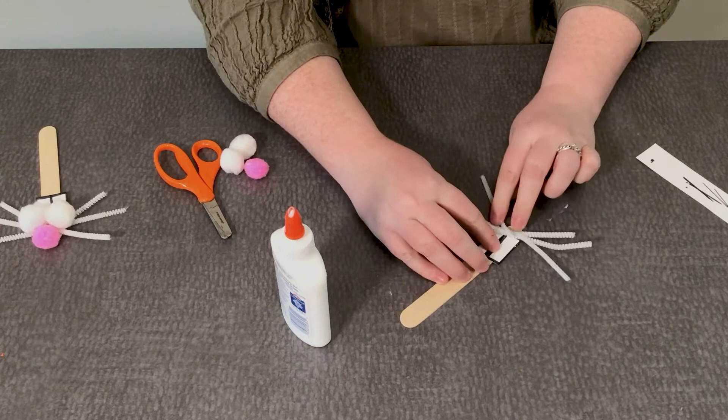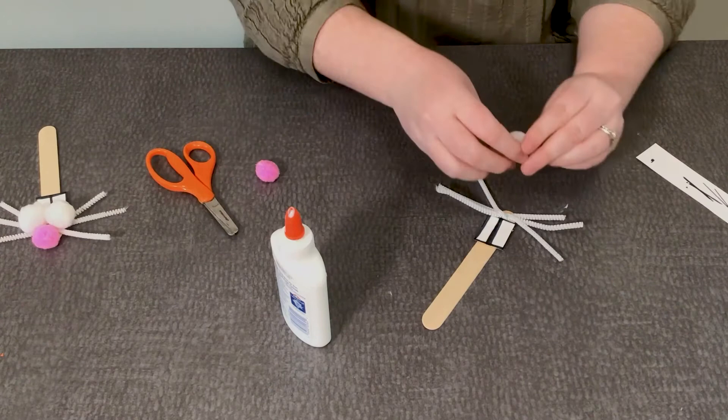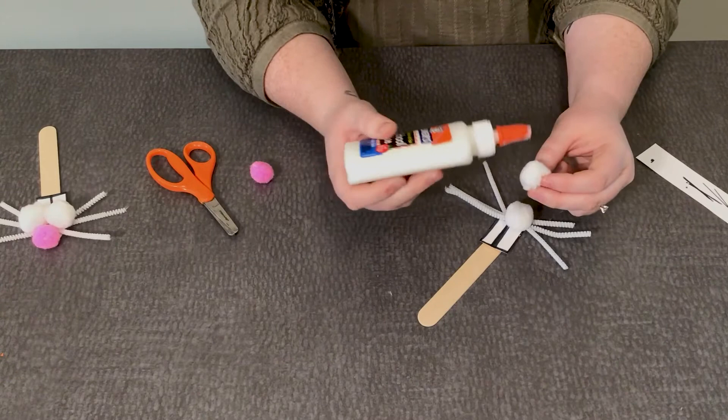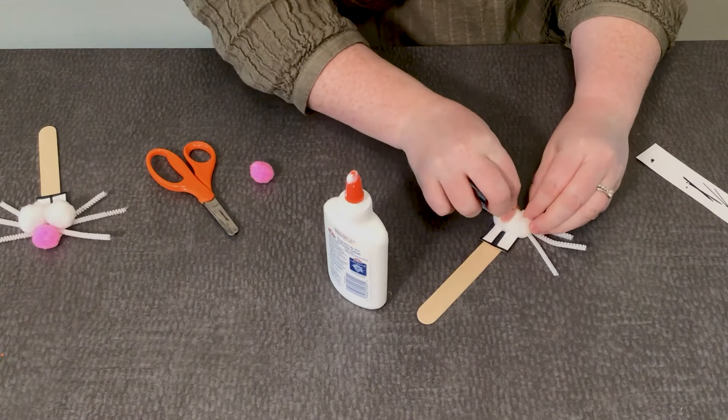Next we need our little bunny cheeks. This is where our two white pom-poms are going to come into play, so we're going to glue that down. And we'll have our bunny cheeks and we're going to hold it down for a few seconds just so it gets nice and stuck.